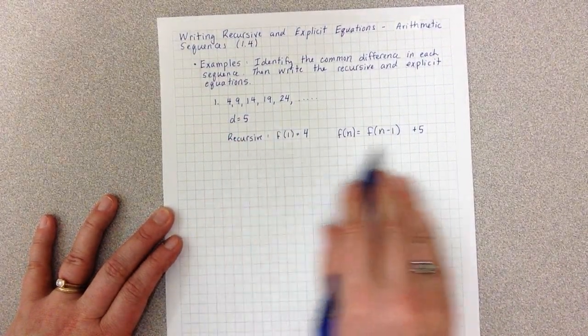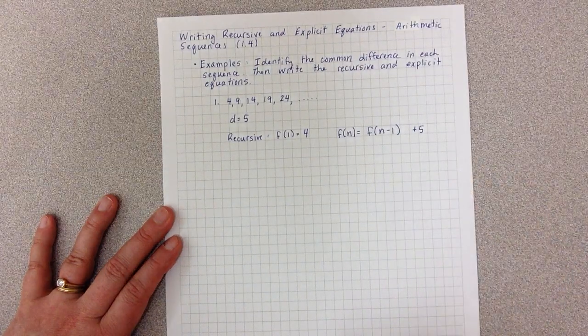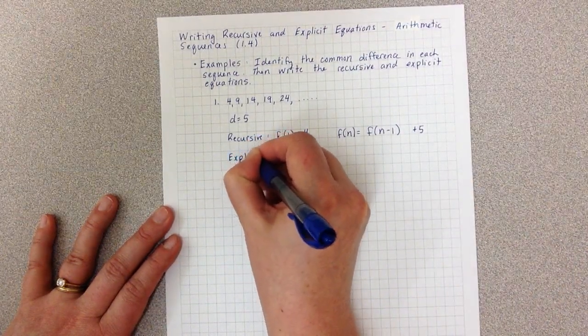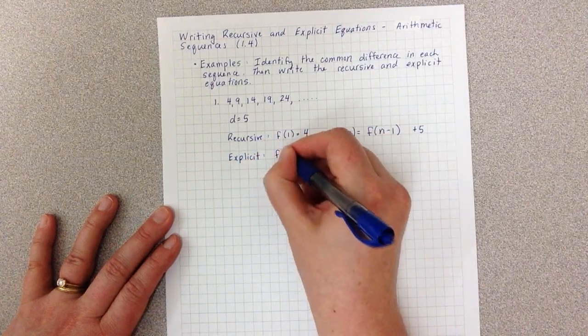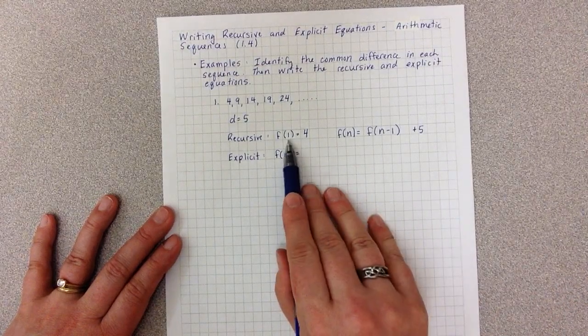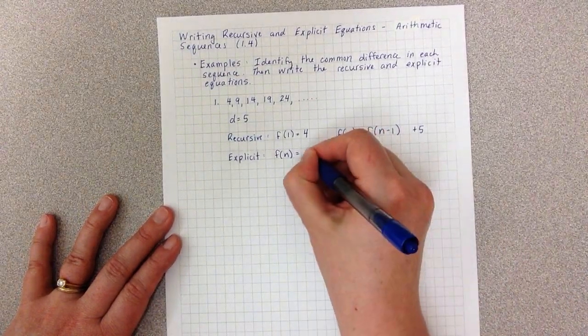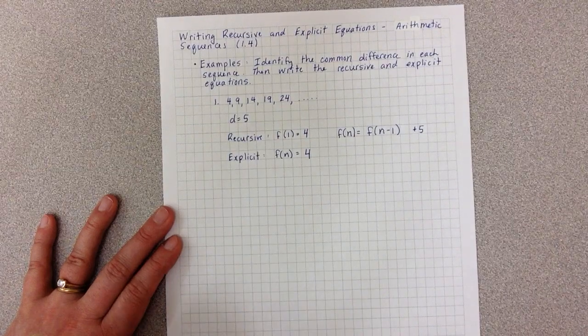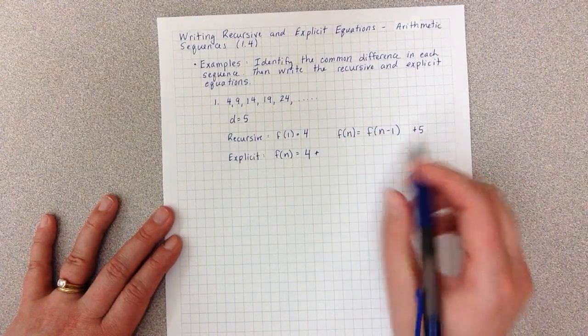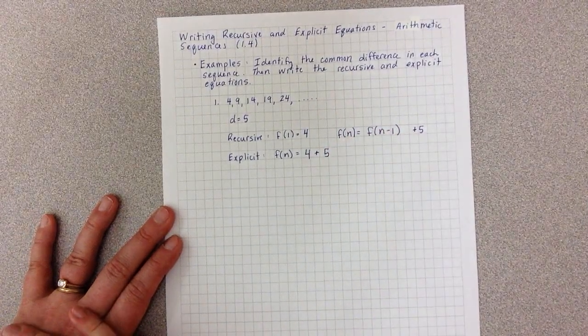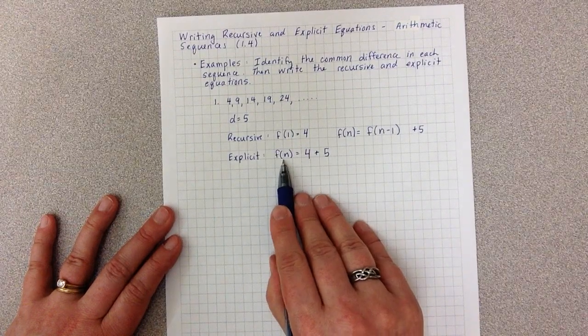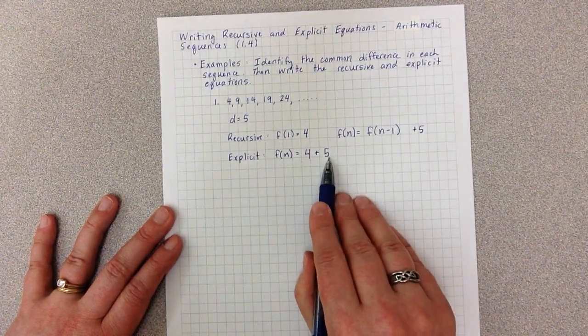Once I've written the recursive, the explicit is a lot easier to write. In the explicit, I always start where I'm starting, so F(1) = 4. Then I'm going to say what I do each time, and what I do each time is add by positive five, which means I'm actually multiplying the N by five.